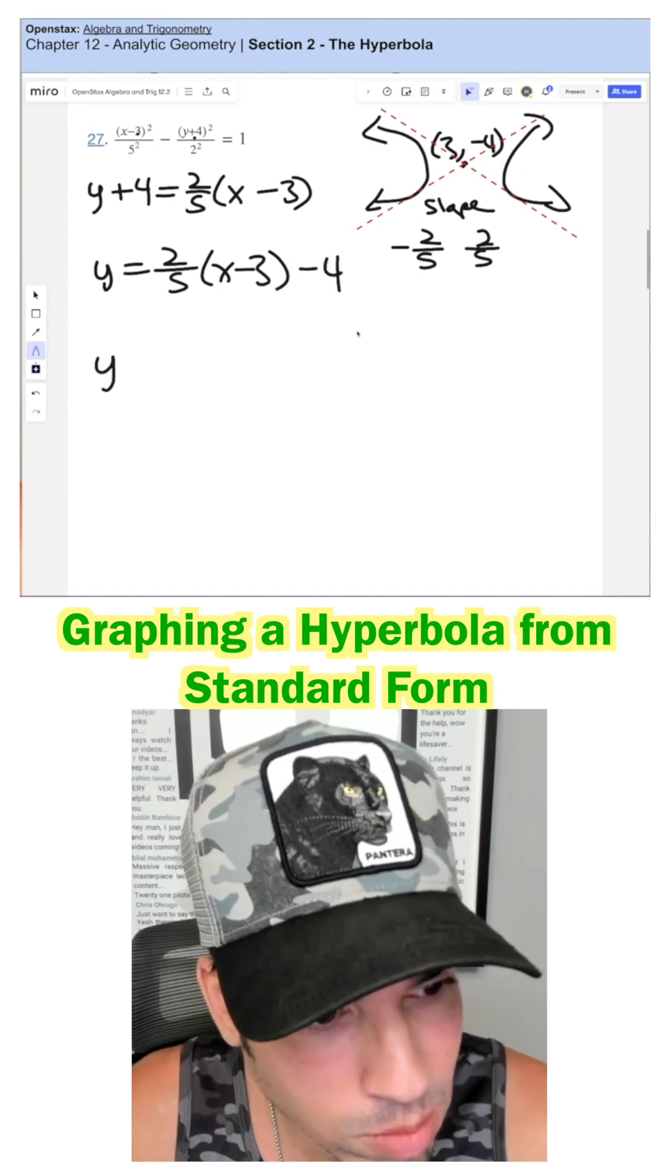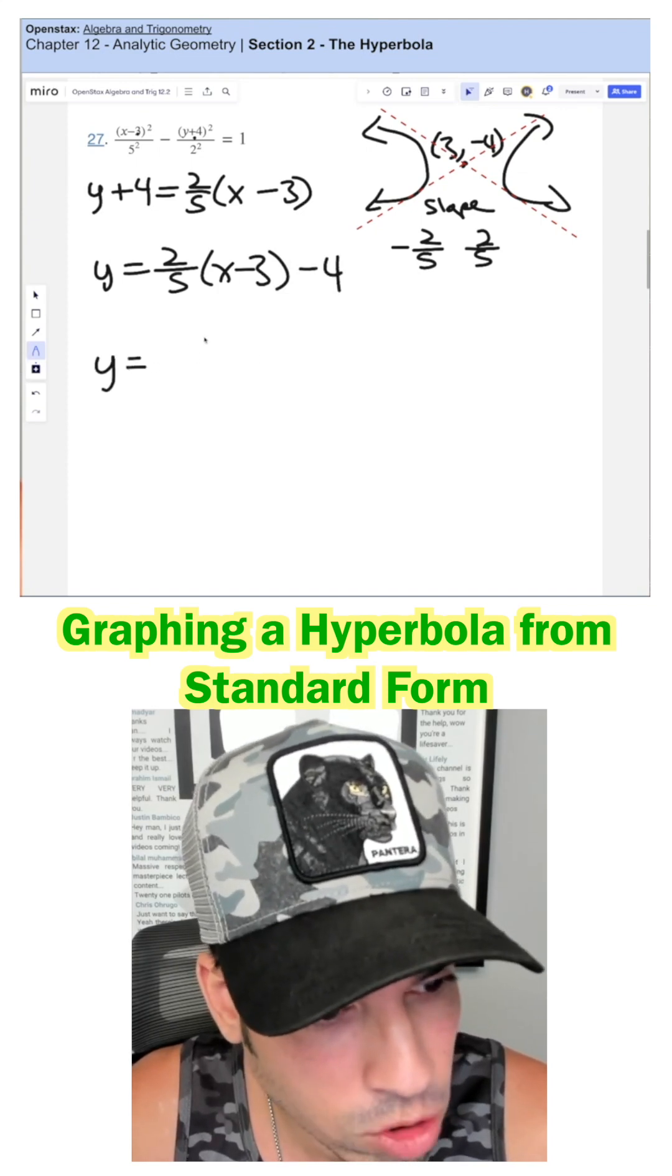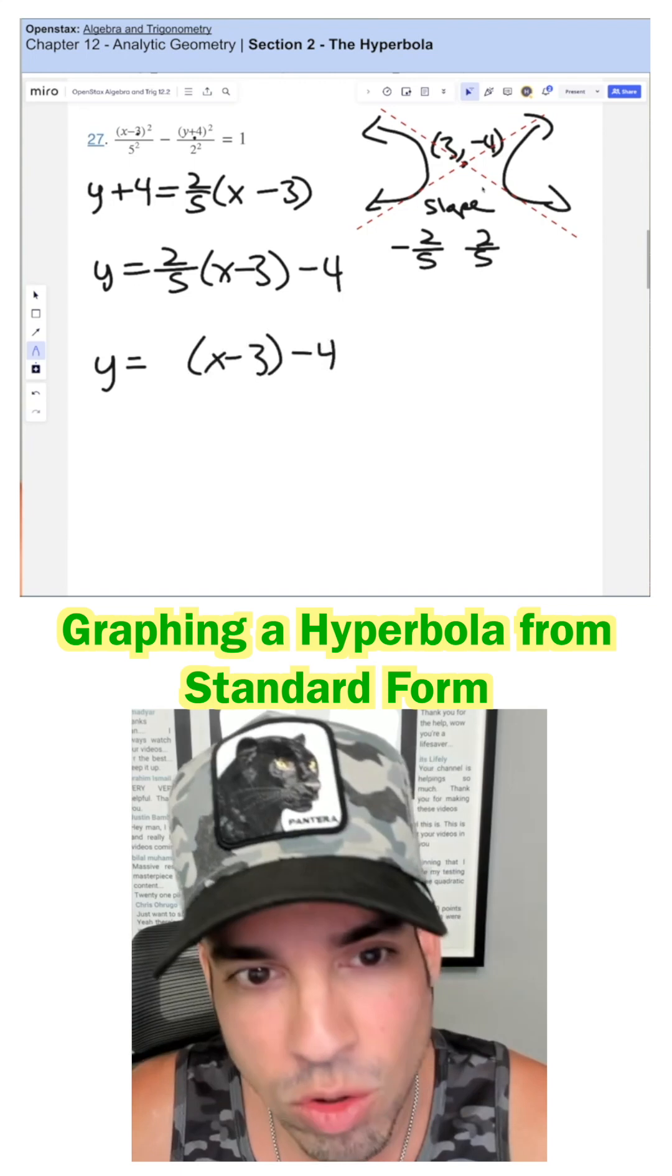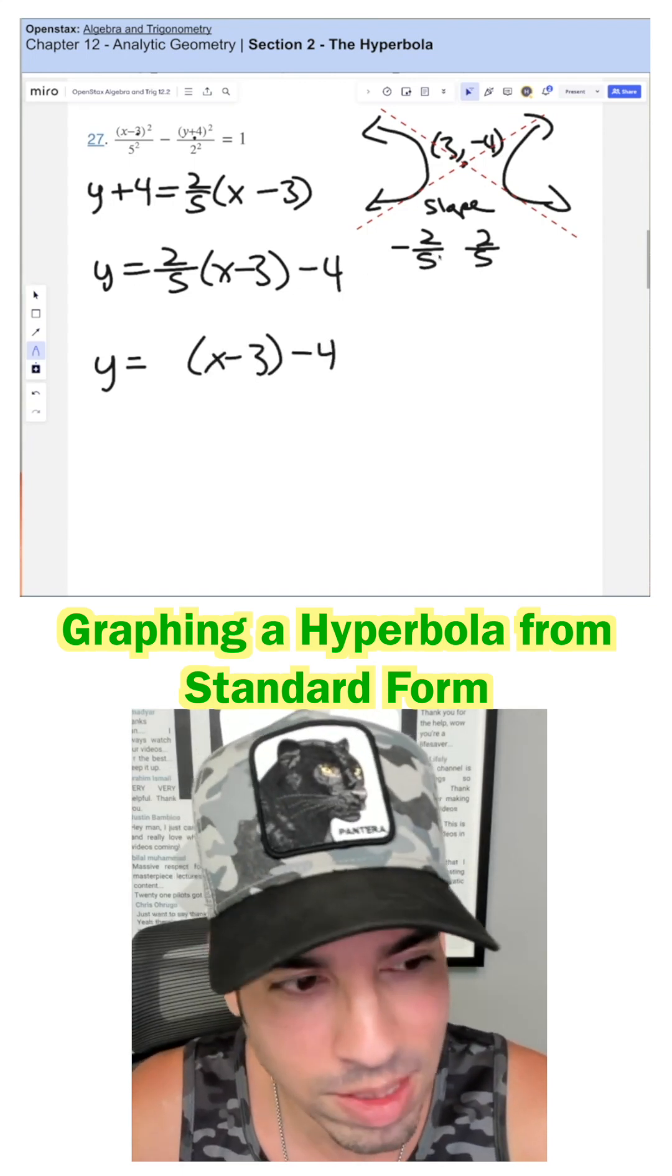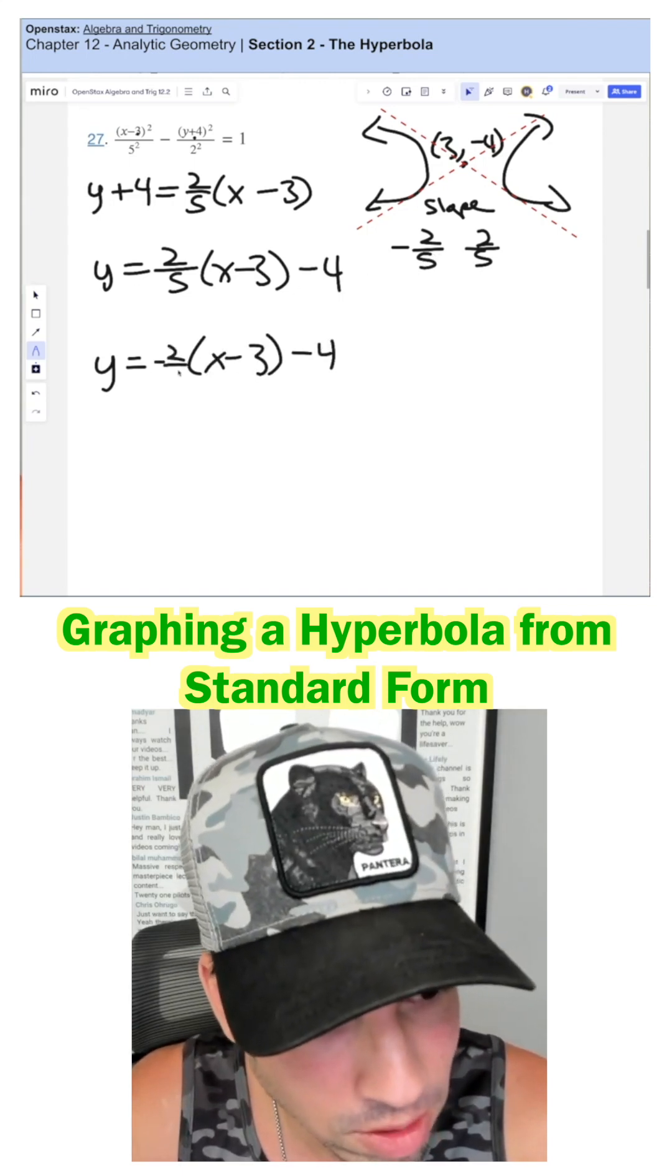And then the second asymptote is the exact same in terms of the x minus three and the minus four because it's using the same point, but the slope is negative. So we just change that to negative two fifths.